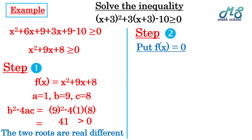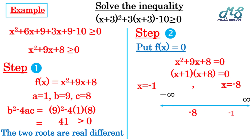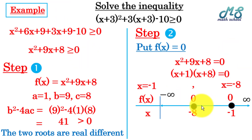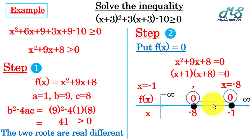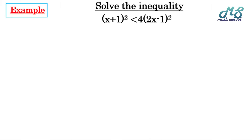Set f(x) = 0: x² + 9x + 8 = 0. By factorization: (x + 1)(x + 8) = 0, giving x = -1 and x = -8. On the number line, at x = -8 and x = -1, f(x) = 0 and the points are shaded (closed) because the sign is ≥. Between the roots the function is negative; at the right and left it is positive. The solution set is ℝ minus the open interval (-8, -1).